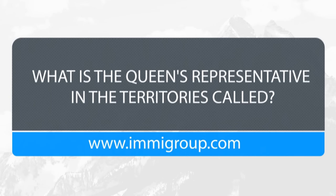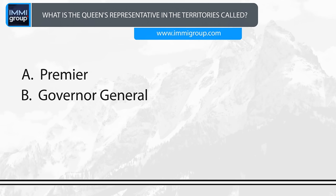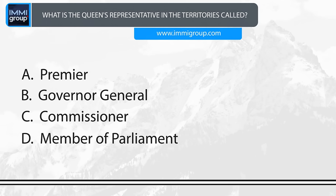What is the Queen's representative in the territories called? A. Premier. B. Governor-General. C. Commissioner. D. Member of Parliament. Answer: Commissioner.